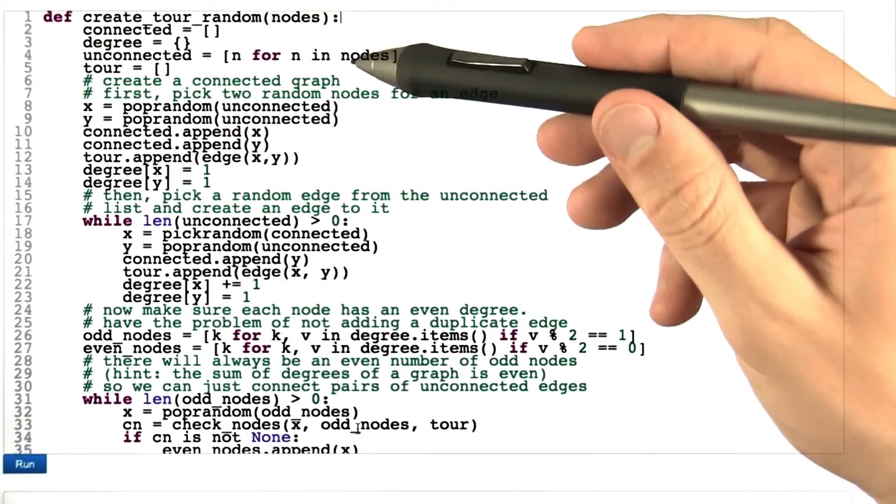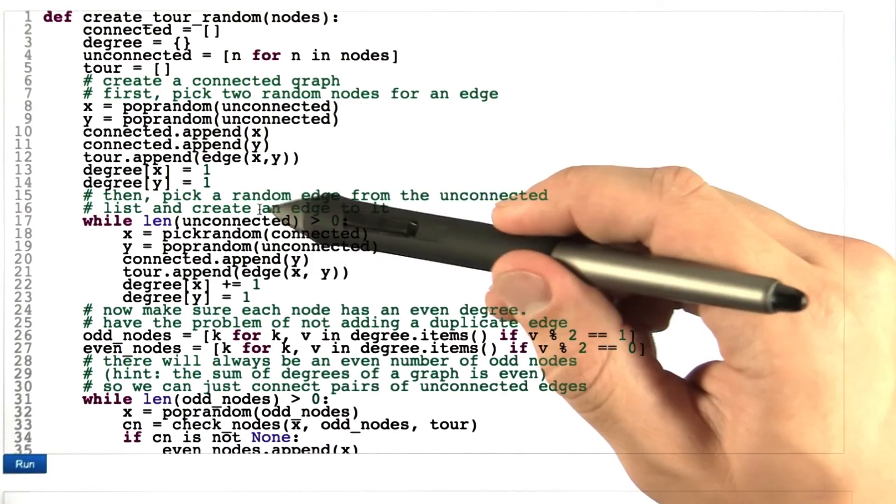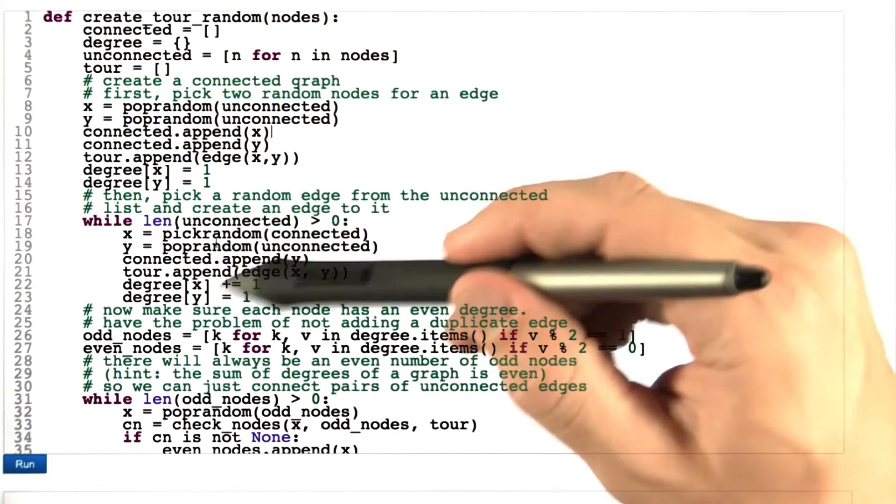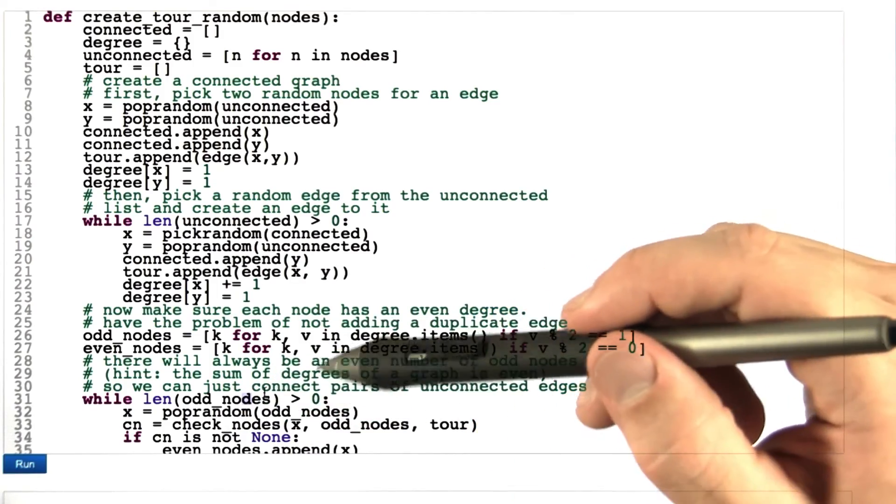Here's my code that does what I just described. In the first step, we pick two random nodes and add them to the graph. And while we still have unconnected nodes, we continue connecting everything. And then while we still have odd nodes, we continue connecting the odd nodes.